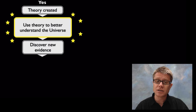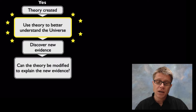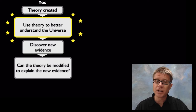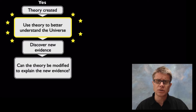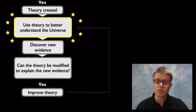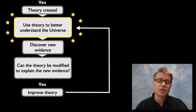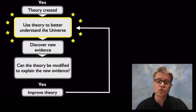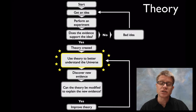What happens next? We discover new evidence, and we ask: can we modify the theory a little bit so it can explain this new evidence? Natural selection had to be modified when we started thinking about sexual selection. If we can, then we improve upon the theory, and this cycle occurs over and over again — it's a feedback loop to make sure our theory matches what's really going on in the universe.